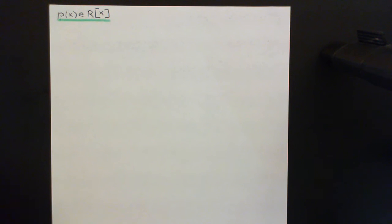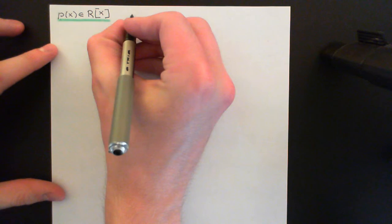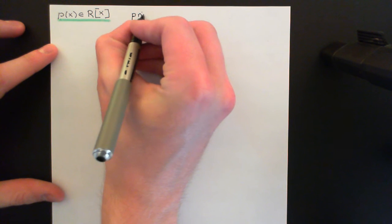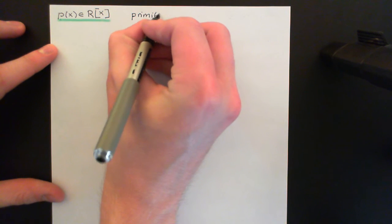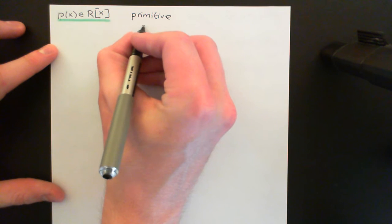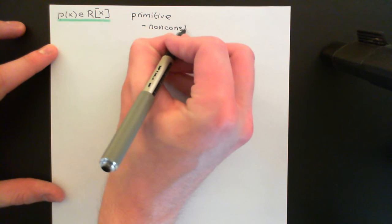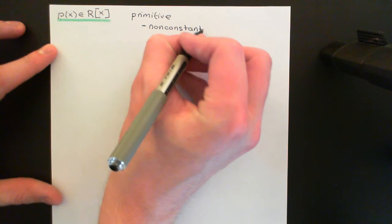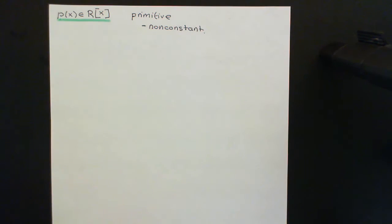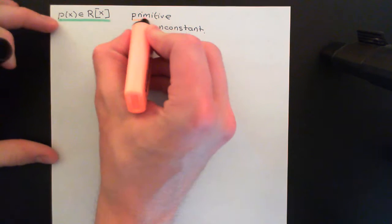In order for this corollary to work, this polynomial has to be rather special. This is only going to apply for polynomials that are what are known as primitive. There are two parts to primitive. Firstly, we want it to be non-constant — that's the easy part, we're getting rid of all the boring constant polynomials. So a primitive polynomial is a non-constant polynomial.